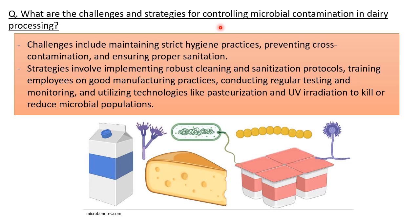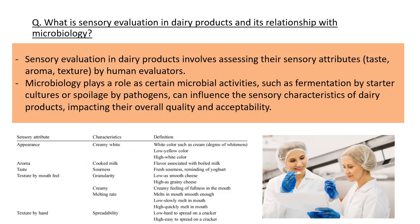What are the challenges and strategies for controlling microbial contamination in dairy processing? Challenges include maintaining strict hygiene practices, preventing cross contamination, and ensuring proper sanitation. Strategies involve implementing robust cleaning and sanitation protocols, training employees on Good Manufacturing Practices (GMP), conducting regular testing and monitoring of the product, and utilizing technologies like pasteurization and UV radiation to kill and reduce microbial load.